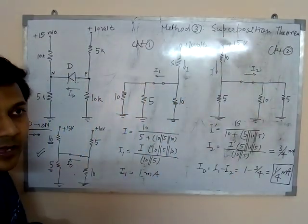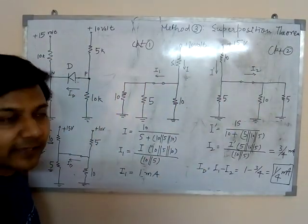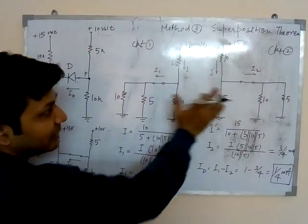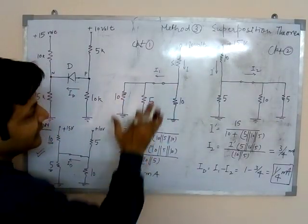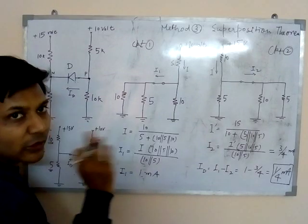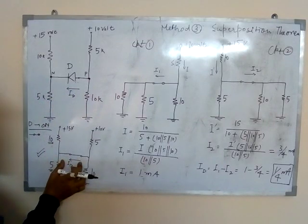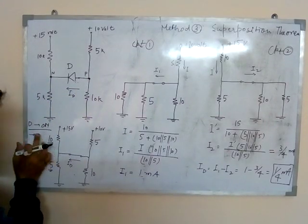So what will be the final answer? Final answer will be I1 minus I2. Because superposition theorem says that we have to take the algebraic sum of the current whatever they are coming or going through this particular point in which I want to know the current. Here I am interested to know the current through this P to N, which I have taken short circuit. Why? Because I assumed diode on.